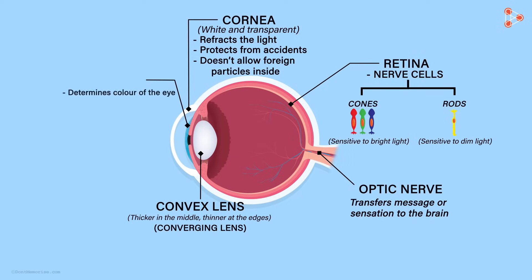Behind the cornea, the colorful part of the eye called the iris is present. It has a small opening at the centre called pupil. Iris controls the light entering through the pupil by contracting and expanding.